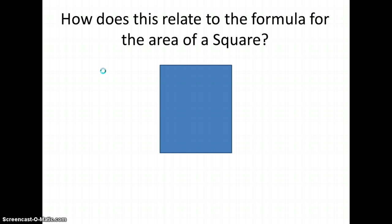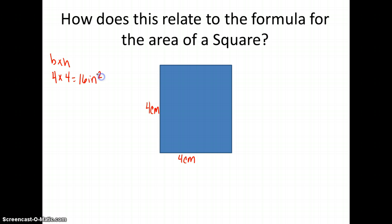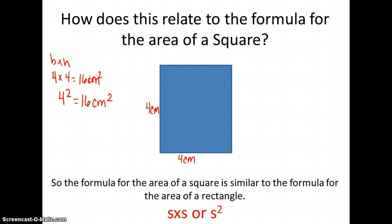So how does this relate to the formula for the area of a square? A square is a special kind of rectangle where all four sides are congruent. So if I wanted to use base times height, since it is a special rectangle, I could — substituting a base of 4 and a height of 4, I get 16 centimeters squared.